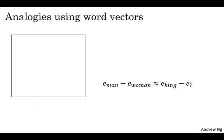And I think has helped the whole community get better intuitions about word embeddings, about what word embeddings are doing. So let's formalize how you can turn this into an algorithm. In pictures, the word embeddings live in maybe a 300-dimensional space. And so the word man is represented as a point in this space, and the word woman is represented as a point in this space, and the word king is represented as another point, and the word queen is represented as another point.